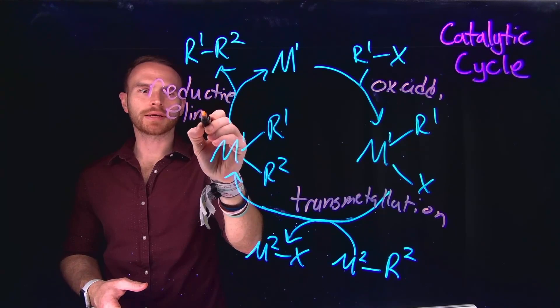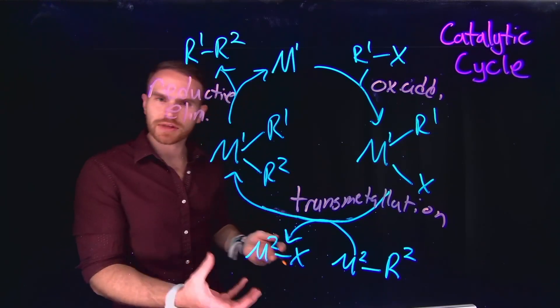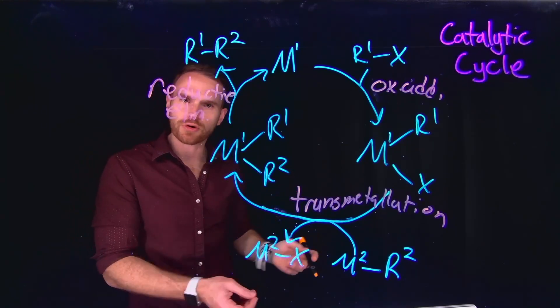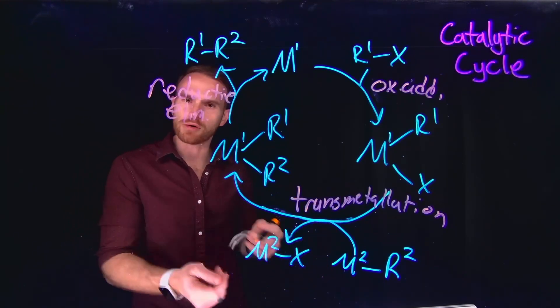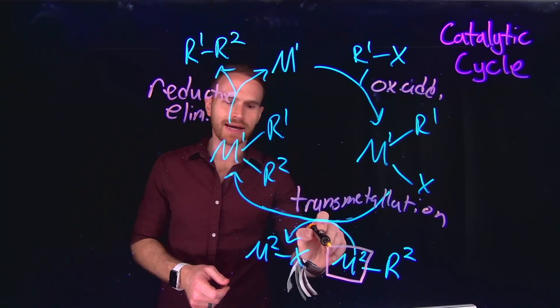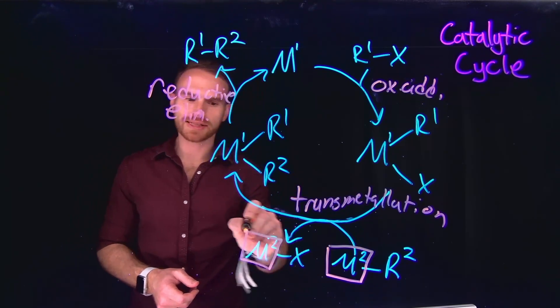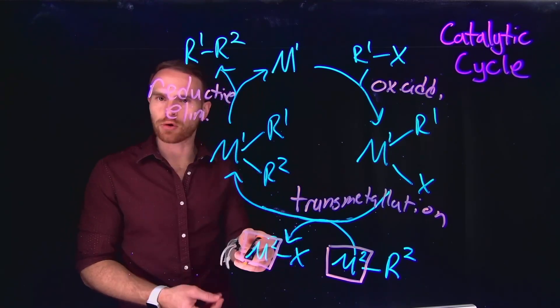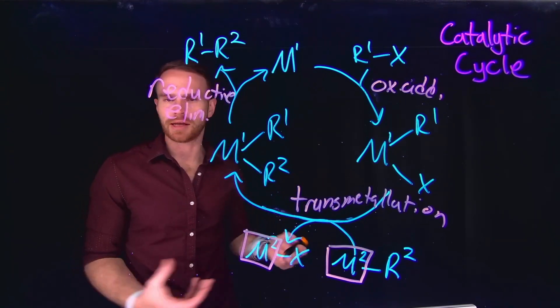Now, importantly, the difference in all of the different carbon-carbon bond forming reactions that we're going to learn about that utilize palladium to form those new carbon-carbon bonds, the major difference is going to be the identity of the transmetallating reagent or the metal or metalloid involved in transmetallation.